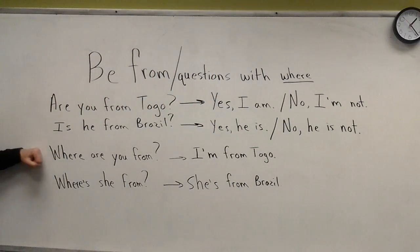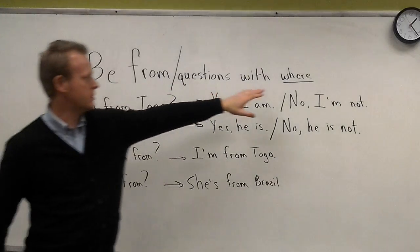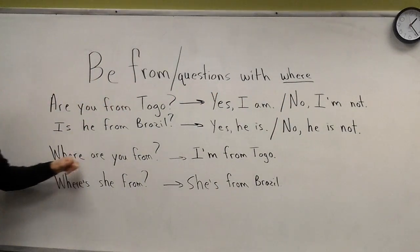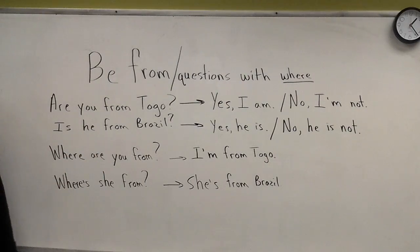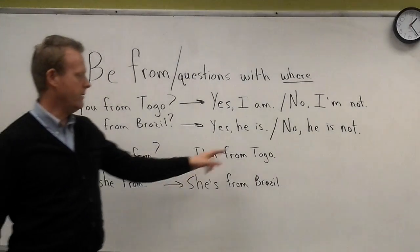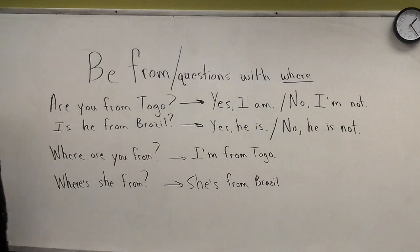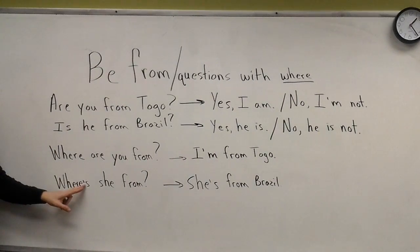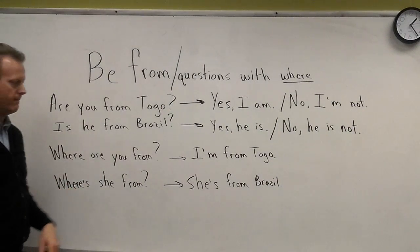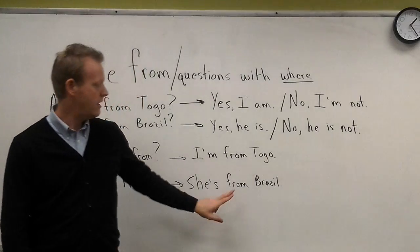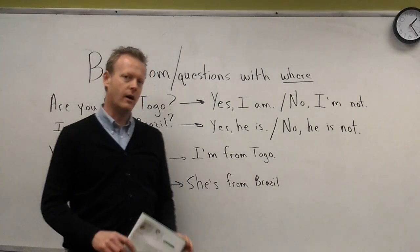Alright, you can also use the question starting with 'where.' Where are you from? I am from Togo. Or where is — notice the apostrophe S here, that means 'where is' — where is she from? She is from Brazil.